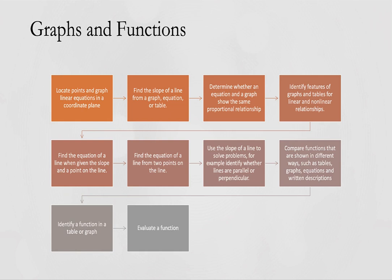Finally, because there are only four sections, you have graphs and functions. One of the topics is the coordinate plane, so you have to be able to locate points, plot points, and read points, and then graph a linear equation on the coordinate plane. You have to find the slope of a line from a graph, equation, or table. We've done this already, so it shouldn't be too difficult. You have to determine whether an equation or a graph shows the same proportional relationship—that is not so horrible. You have to be able to identify the features of graphs and tables for linear and non-linear relationships.